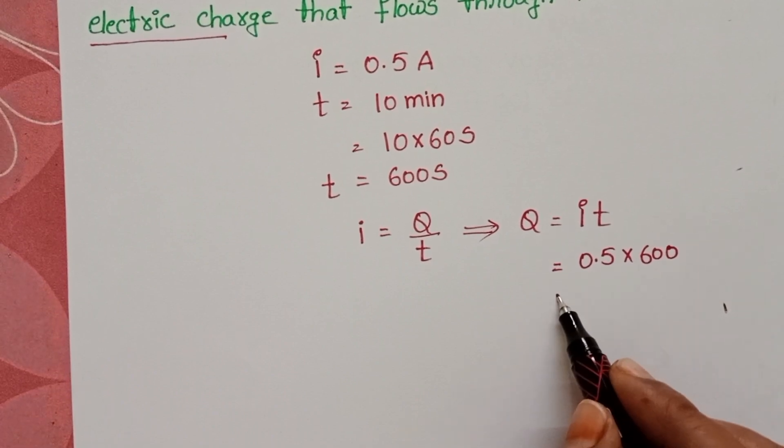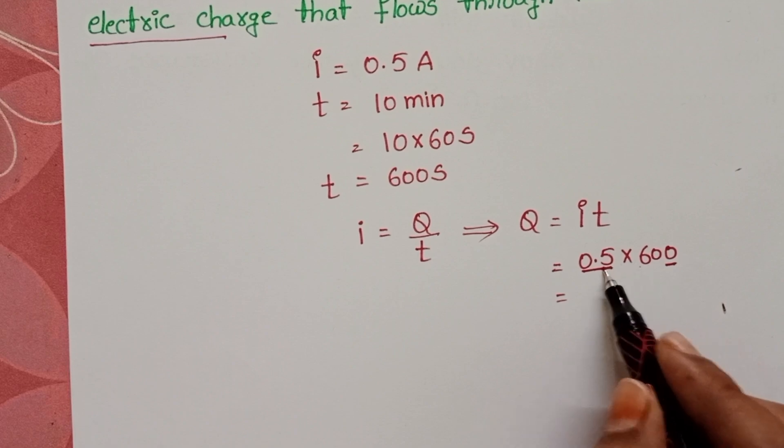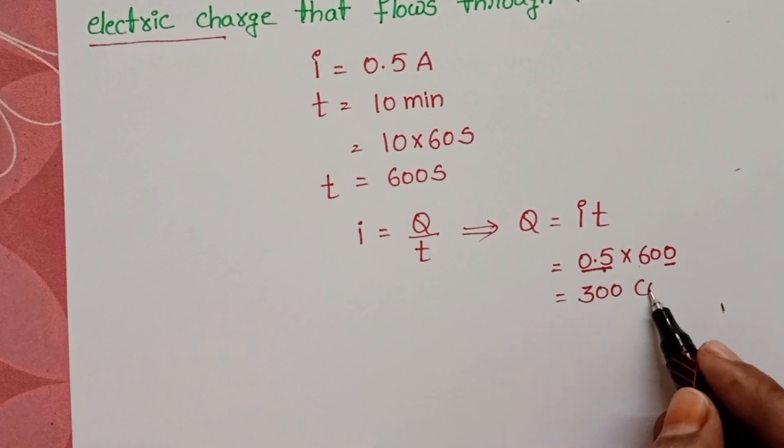Multiply these values. 0.5 into 600: 0.5 into 10 is 5, then 6, so 5 times 6 is 30. So electric charge is 300 coulombs.